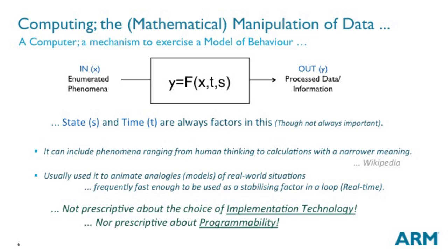Wikipedia tells me that computing doesn't necessarily have to apply to mathematical formula — it can apply to human thinking. If you look at your smartphone, it's not outwardly processing numbers; it's delivering some sort of functionality. It's used to animate analogies. It always has to be fast enough to be useful, which means time and state are an important part of this. It doesn't say anything about the implementation technologies, nor is it prescriptive about programmability. It's just processing — exercising a model.